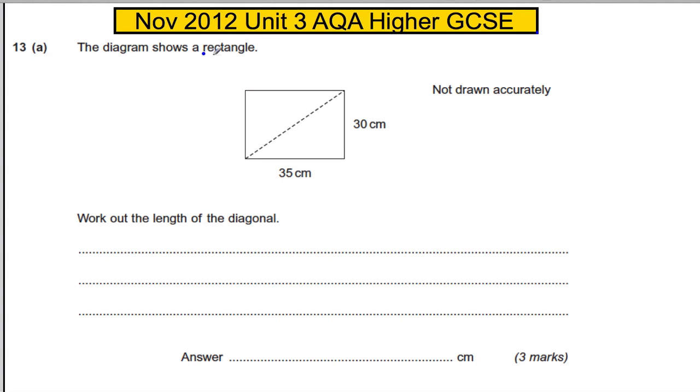Here we've got a rectangle. It's not drawn accurately, so we're supposed to use logic, not scales or anything. Work out the length of the diagonal.